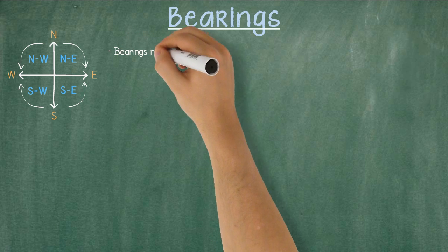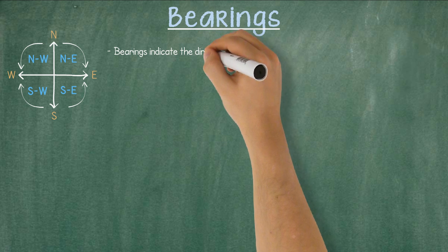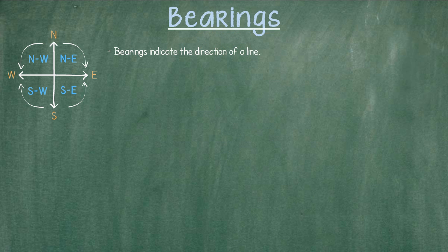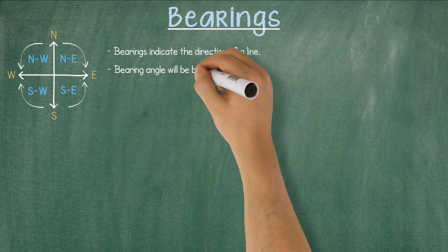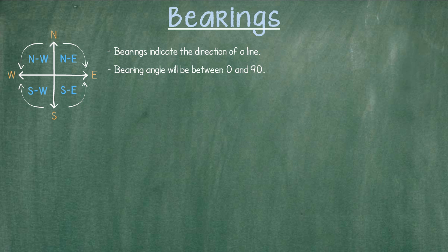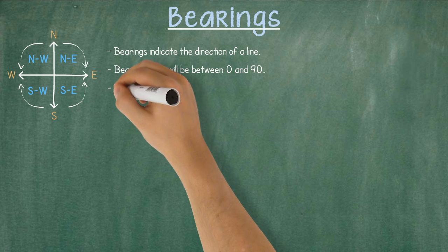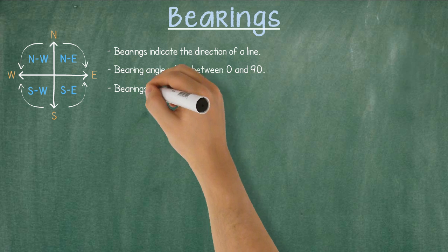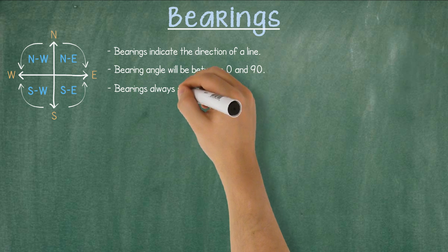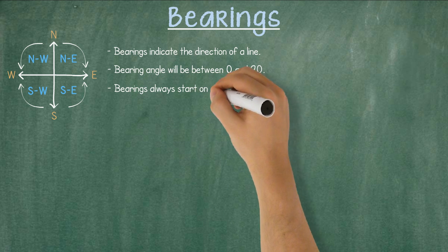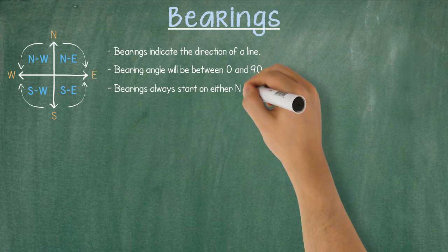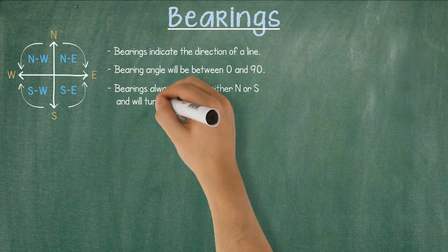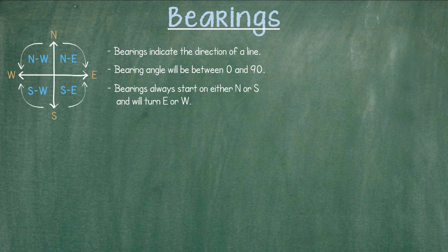Bearings are used to indicate the direction of a line. The bearing angle will be between 0 and 90 degrees. Bearings will always start either at north or south and will always turn east or west.